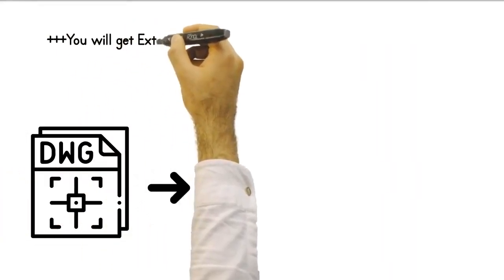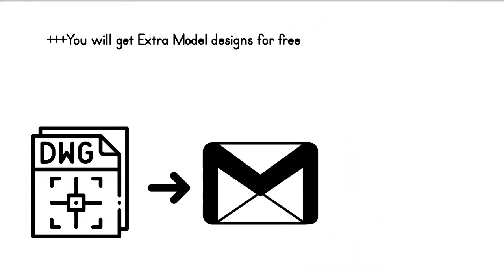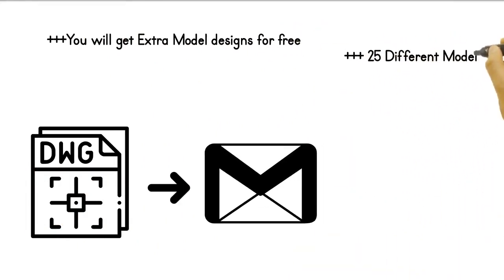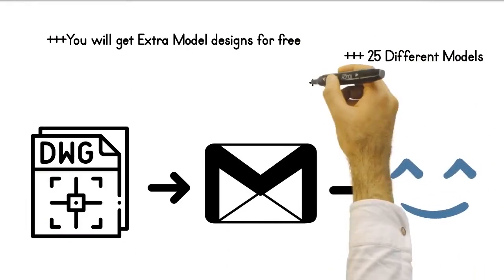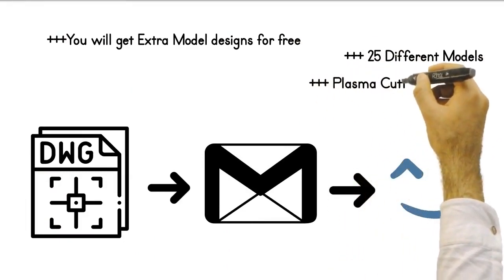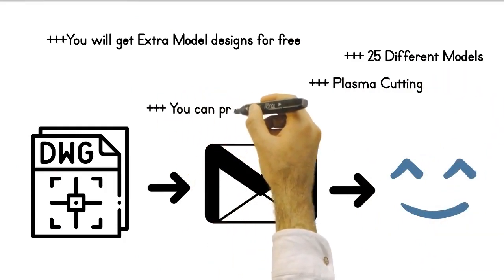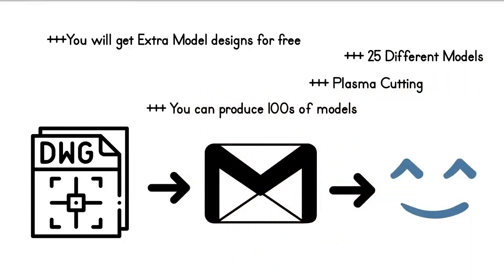The drawings of the molds required for extra model production will be sent to you free in AutoCut format. There are 25 free designs in this file, for example, angular balcony bay window molds. When you start using these molds in a plasma cutter, you will be able to produce hundreds of different models.